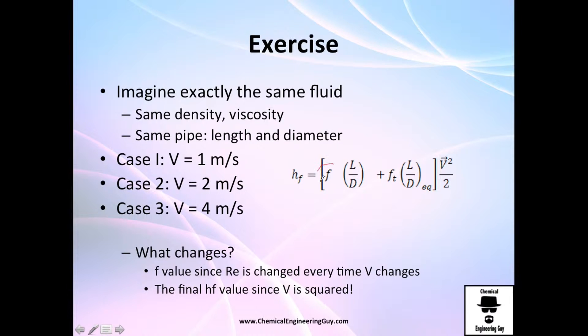So actually this value will change, but it won't change that much if you increase the velocity. For example, you have a Reynolds number when valued in one, and then you have a Reynolds number when valued in two. Well, that is actually two times the Reynolds number. So the relationship between these two guys is two times.